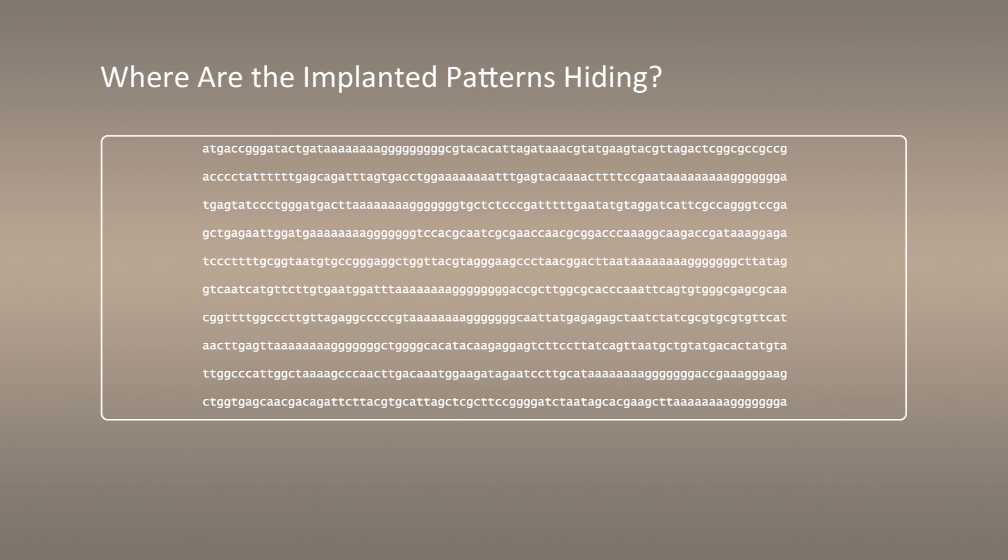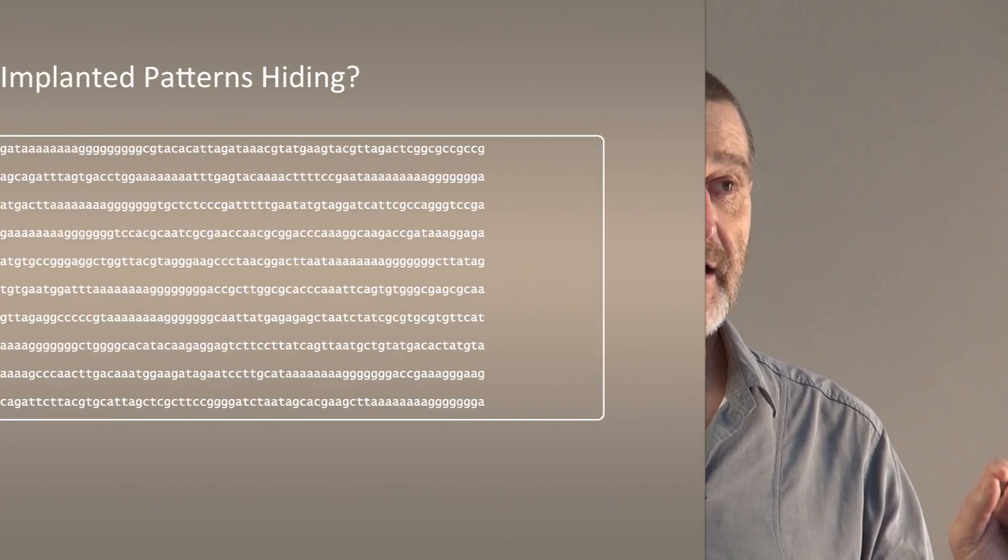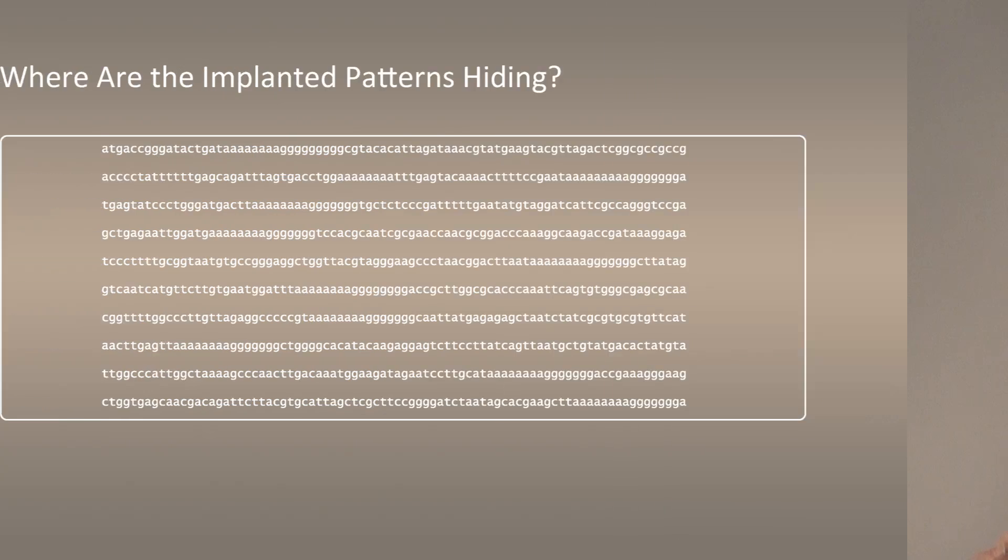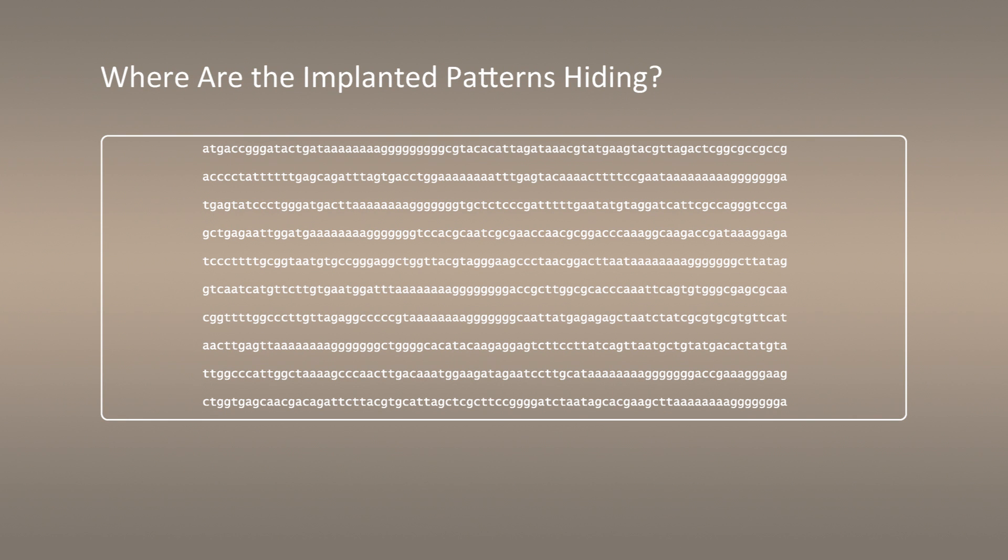Tell me where these patterns are. What algorithm should you run to figure out where I have inserted these patterns? You already probably recognize that if we slightly modify our frequent words problem, we will find the pattern I have inserted. Indeed, you can concatenate all these sequences and find the most frequent word in the resulting concatenate. The implanted pattern will appear 10 times in this concatenate.